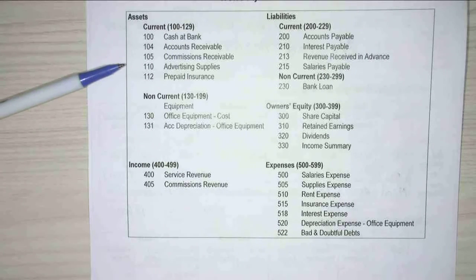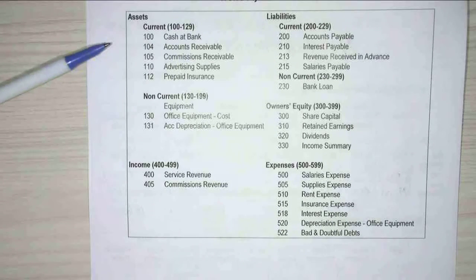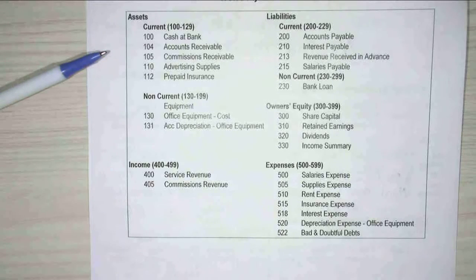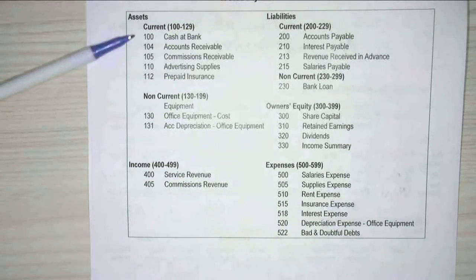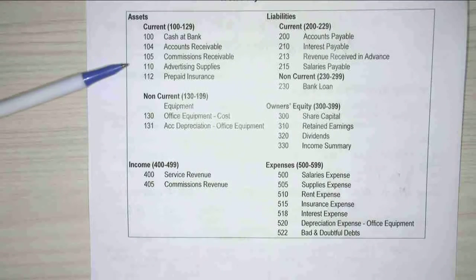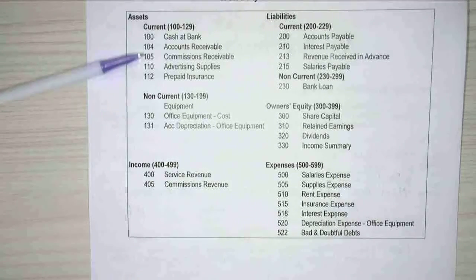So a chart of accounts is just a number of accounts? Well, it is, yeah. This is to help identify all the accounts that are in a business's ledger — in their general ledger. So what we look to do is we look to number our accounts.